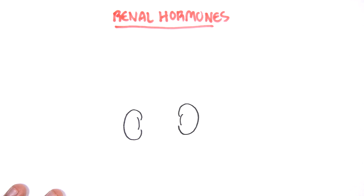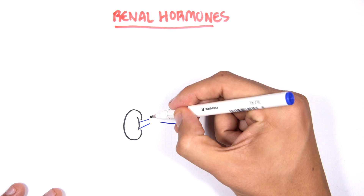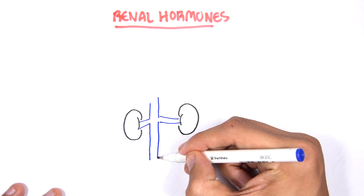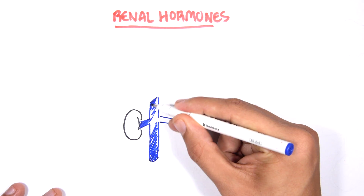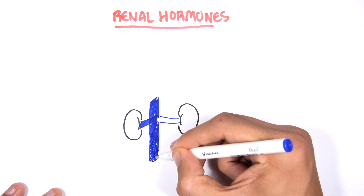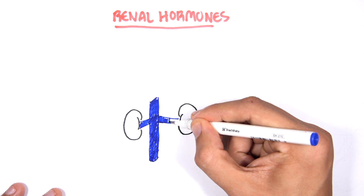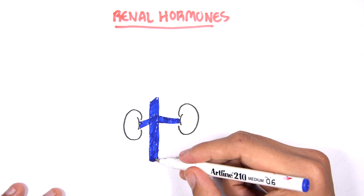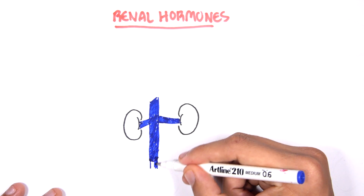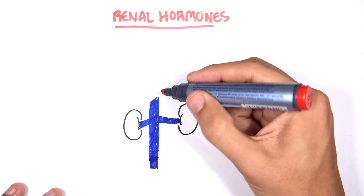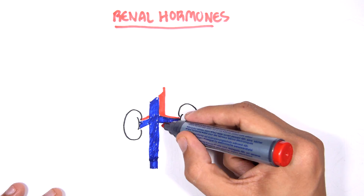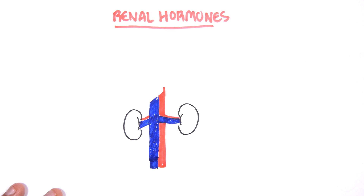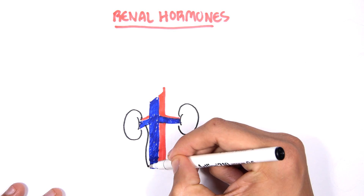So before we start, let's just look at some anatomy. Here we have the two kidneys. The left kidney is slightly higher than the right. Here we have the inferior vena cava, which is where the renal veins drain into. And then you have the descending aorta, the abdominal aorta, which supplies the kidneys with blood.